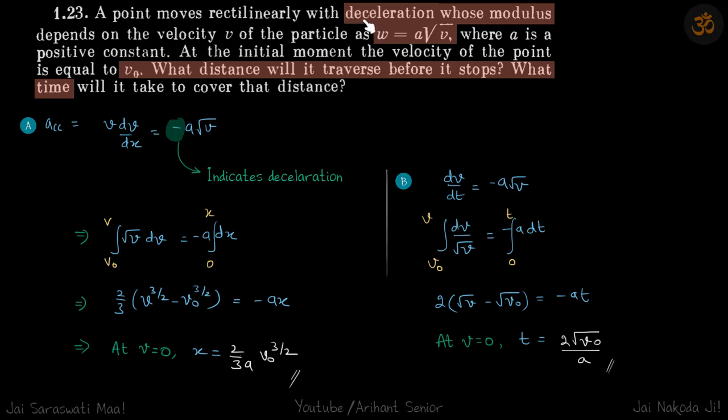A particle is decelerating with its modulus of the acceleration being a√v. So it's the modulus of acceleration, which means actual acceleration is minus a√v because it's given that it is retarding.